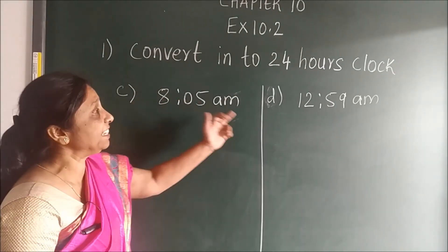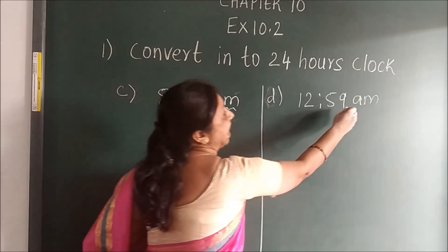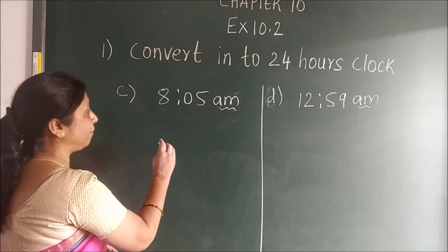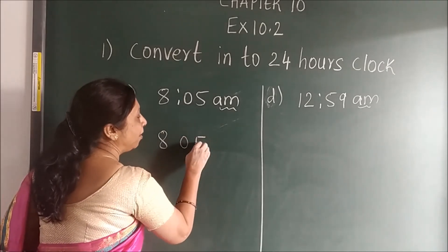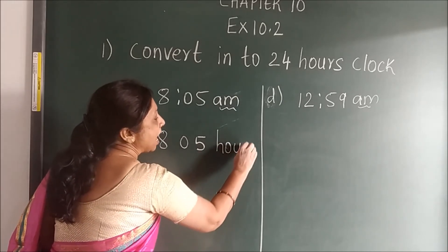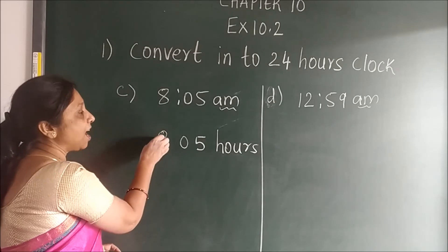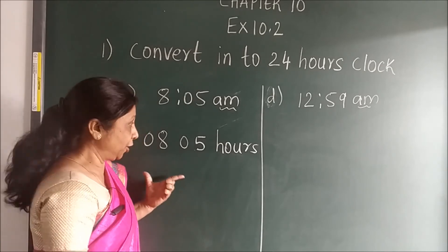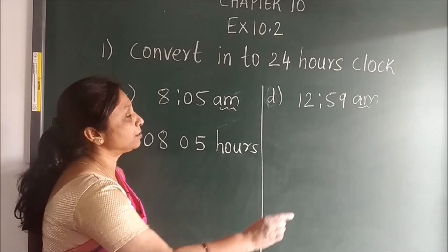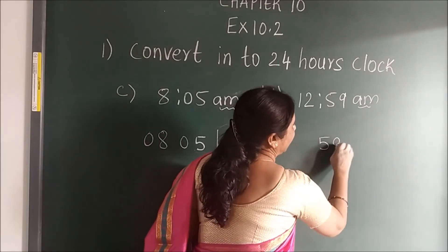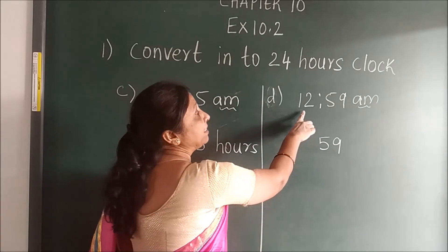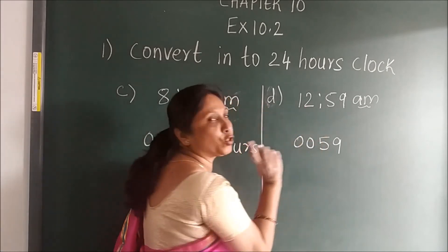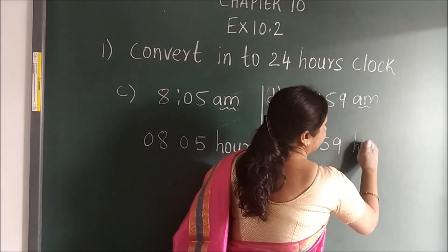In the C and D sums, you see the unit is AM. When it is AM, no need to add 12. What you have to do is directly write this number in hours and minutes. Here you can add 0 because you need the 4-digit number. For AM, you write the number directly. But see — if 12 is given in AM, in 24-hour clock you will write 0000 for 12.